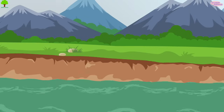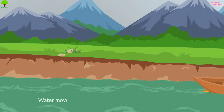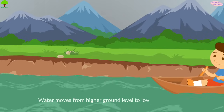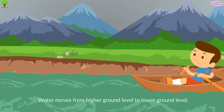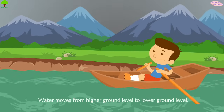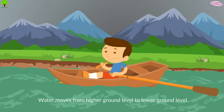The natural behavior of water is that it moves from higher ground level to lower ground level. This means the lower ground is a lot more likely to experience flooding.